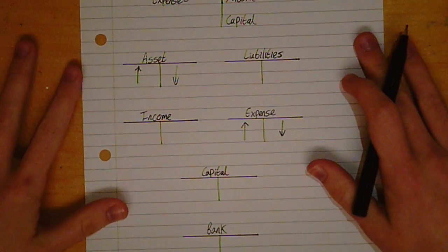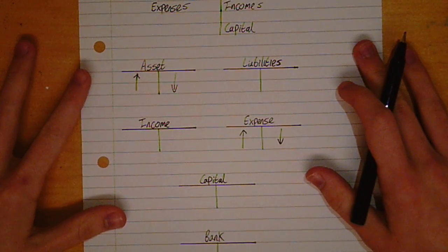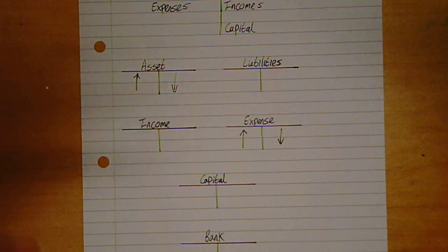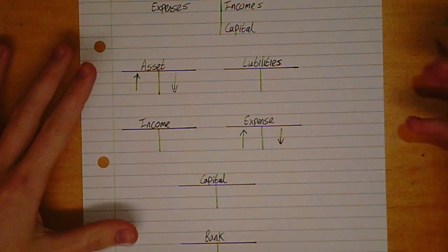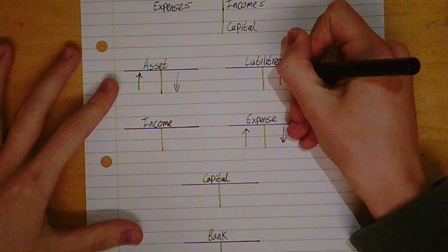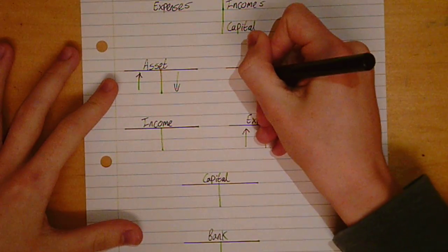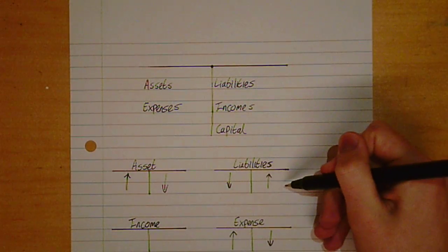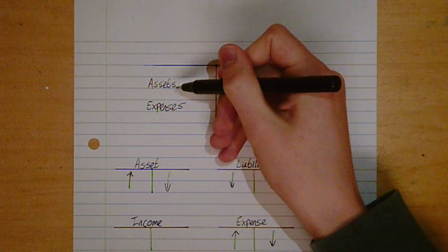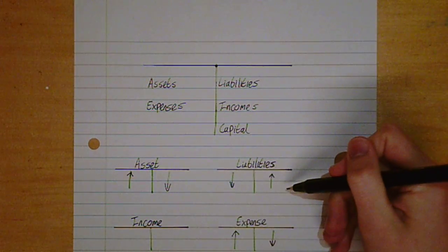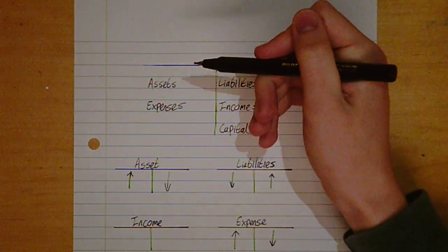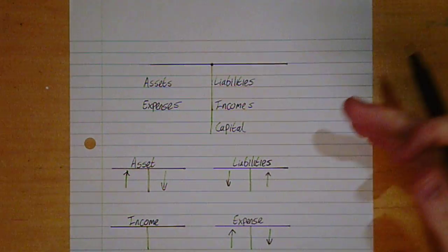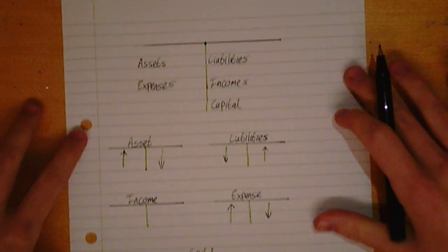So let's go on to liabilities. Say we owe more money to someone — that's a higher liability, we owe more people money. That goes up on the credit and down on the debit. So you see how it's working: liabilities go up on the credit and down on the debit. Assets go up on the debit and down on the credit.